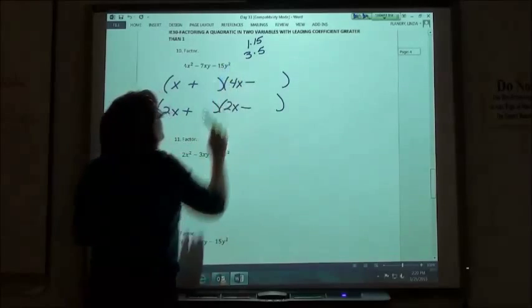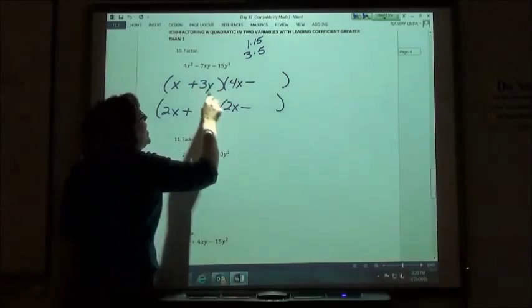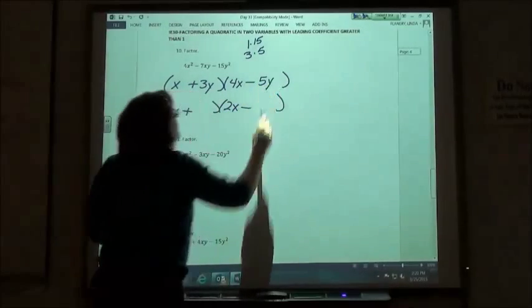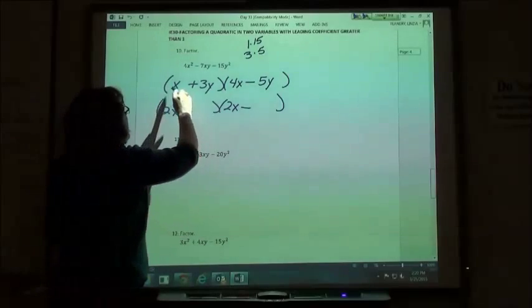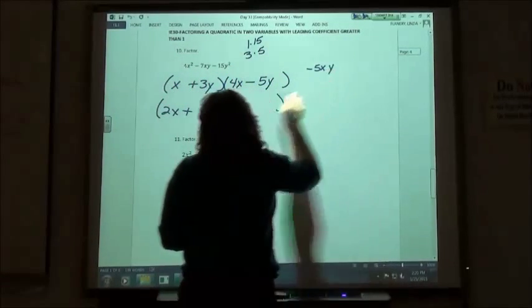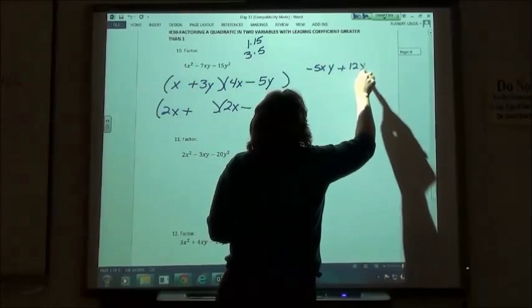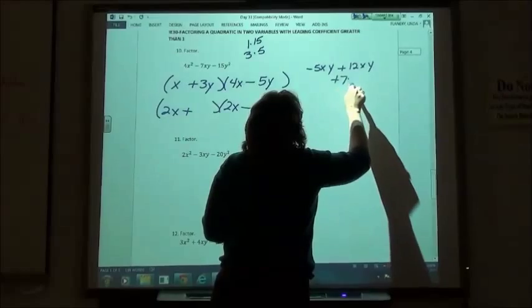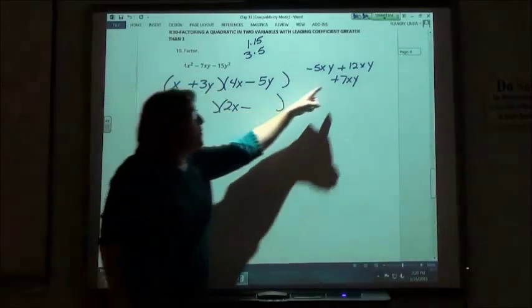But now we've got the y squared, so we've got to put the y's in with our answer. 3y times 5y would give me 15y squared. If I check that one out, I'm going to get negative 5xy and I'm going to get a positive 12xy, which would give me positive 7xy. Well, I wanted to get a negative 7 instead of a positive 7.